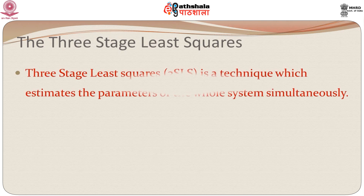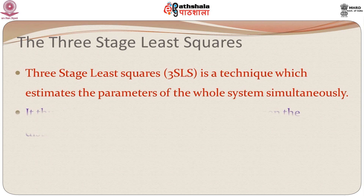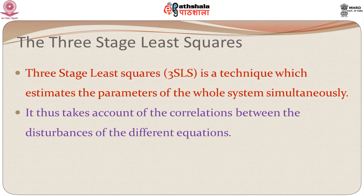We will discuss the three stage least squares. The three stage least squares is a technique which estimates the parameters of the whole system simultaneously, which means we will be looking at all the equations together. Unlike in the previous methods where we had been looking at single equations, in this case we will be looking at all equations simultaneously. It becomes more complicated if you look at all the systems simultaneously.